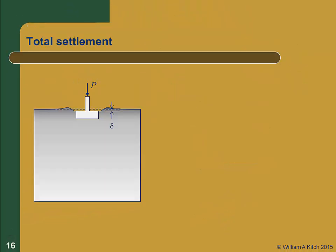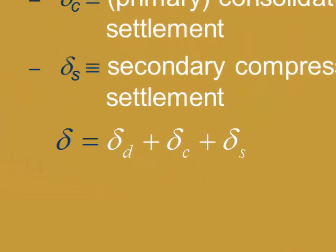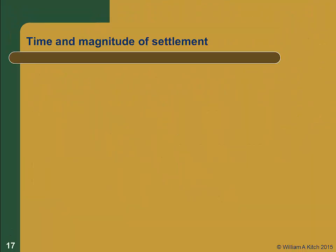So the total settlement delta is due to all three sources: distortion settlement, primary consolidation settlement, and secondary compression settlement. We write that the total settlement delta is equal to delta-D plus delta-C plus delta-S. The three forms of settlement do not contribute equally to the magnitude of settlement, nor do they occur at the same time.